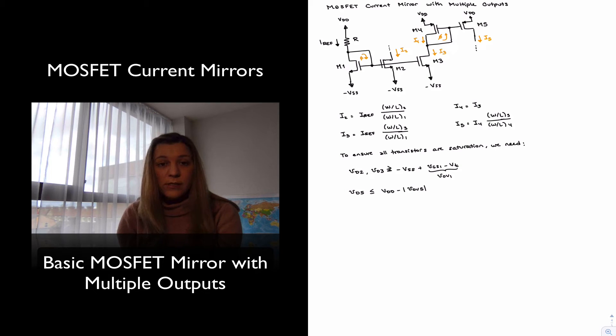Something to notice is the different possible configurations where we can build the current sources or the current mirrors using NMOS transistors, like M1, M2, M3, or PMOS transistors, like M4 and M5. In the case of NMOS transistors, we are sinking current from the circuit.